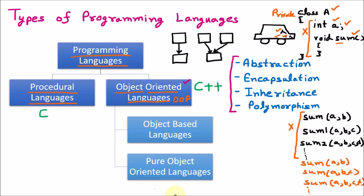Within object-oriented programming, there are two further classifications. The first is object-based languages. Object-based languages are not properly object-oriented — they have only three of the four features. If one feature is missing, the language is called object-based because it wants to be object-oriented but is not, due to the missing feature.